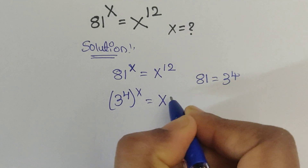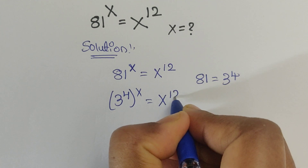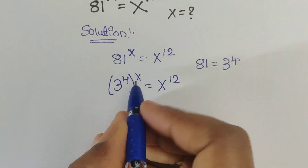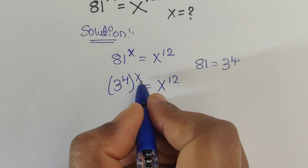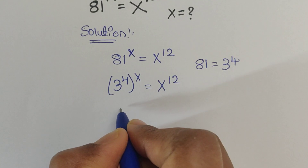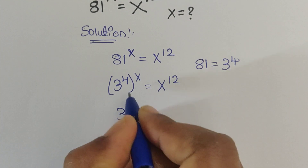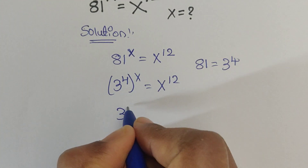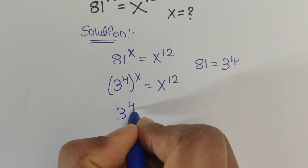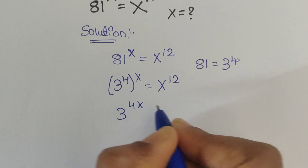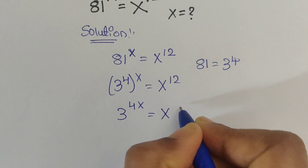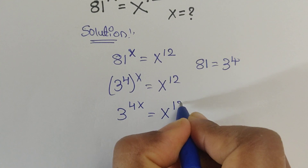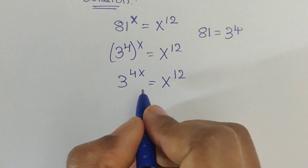Now we multiply these two exponent terms, so we get 3 to the power of 4 times x, which is 3 to the power of 4x, equal to x to the power of 12.